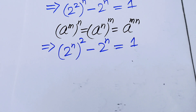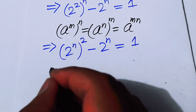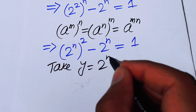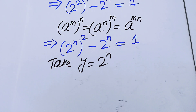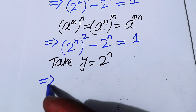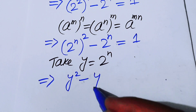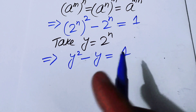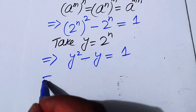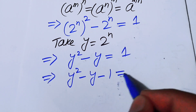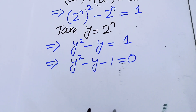In order to change this into quadratic form, I let y equal 2 to the power of n. When you make this substitution, the exponential equation becomes y squared minus y equals 1. After that we move the 1 to the left-hand side and get y squared minus y minus 1 equals 0.